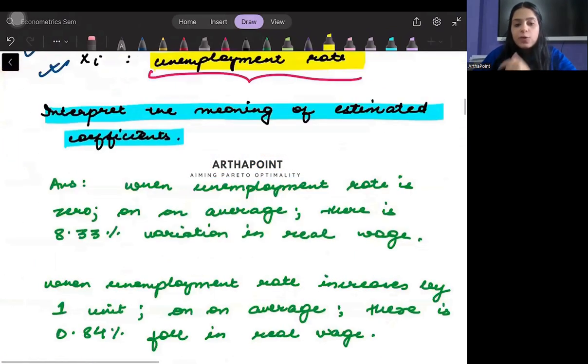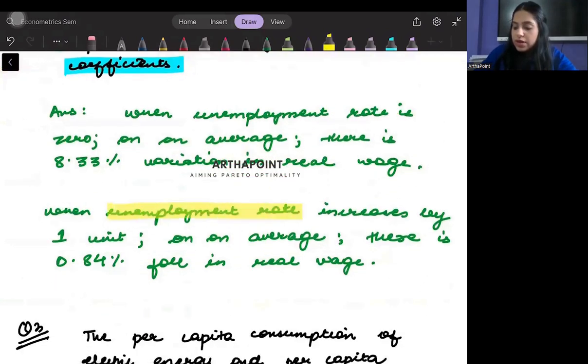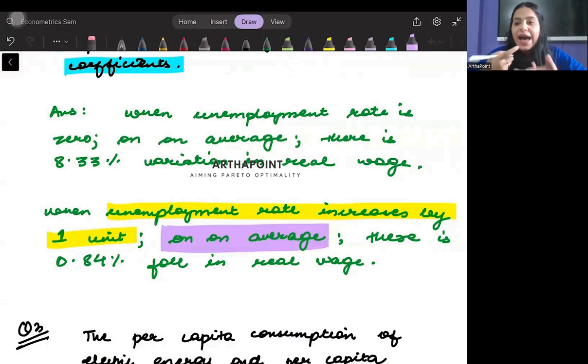So therefore what I can go ahead and say is that when unemployment rate increases by one unit, on an average—using this word is very important because we talk about always the average changes, the expected changes.